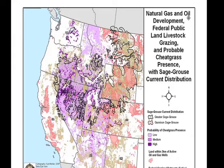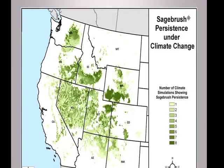Sage-grouse are threatened by at least 26 land uses and related effects, including what I refer to as the big three: oil and gas development, livestock grazing, and cheatgrass incursion. More than 81 percent of greater sage-grouse's current range is affected by at least one of these threats, and most of the range is affected by more than one. Climate change is also predicted to have deleterious effects on sage-grouse and sagebrush steppe.